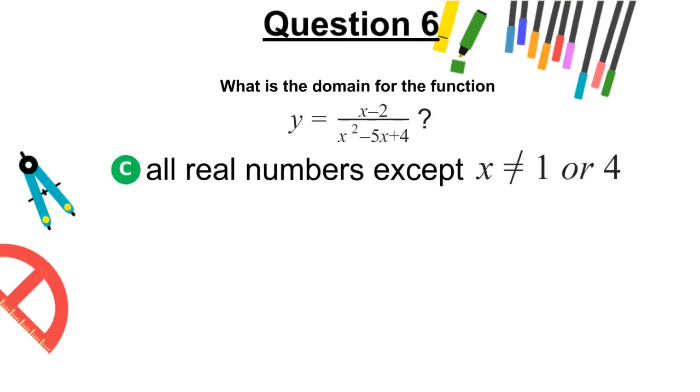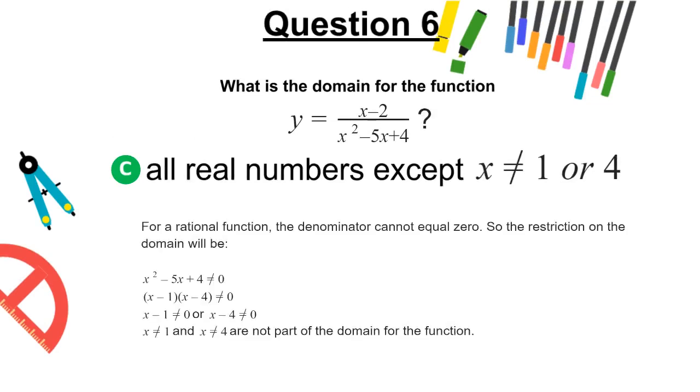The correct answer is C, all real numbers except x ≠ 1 or 4. For a rational function, the denominator cannot equal 0, so the restriction on the domain will be the following.